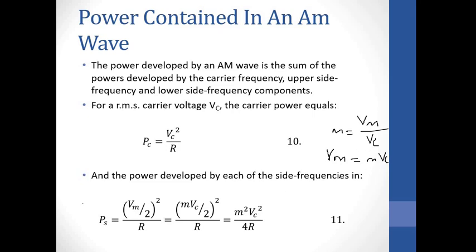If we take this Vm and substitute it into our expression, we get MVc over 2. Squaring everything in the bracket: squaring M gives M squared, squaring Vc gives Vc squared, and squaring 2 gives 4. So this part becomes M squared Vc squared over 4R. This is the power contained in one side frequency.